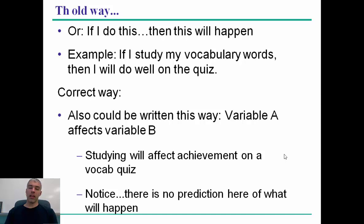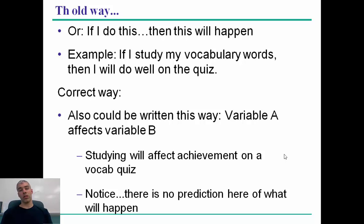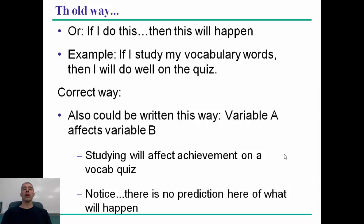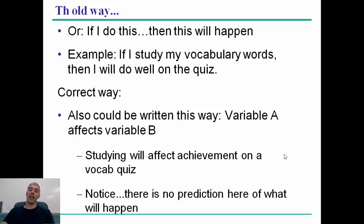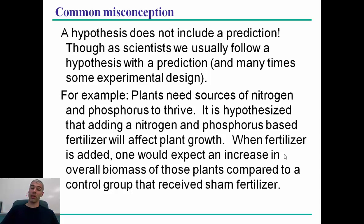The better way to write a hypothesis is: variable A affects variable B. Very infrequently will you see an if-then statement in a scientific journal — they just don't write them that way. For example: 'Studying will affect my achievement on a vocab quiz.' There's no prediction in there; you're just saying this affects that. That's how you'll write your hypotheses, though there are other components to include. The AP considers if-then statements acceptable, but in college it won't be considered appropriate.